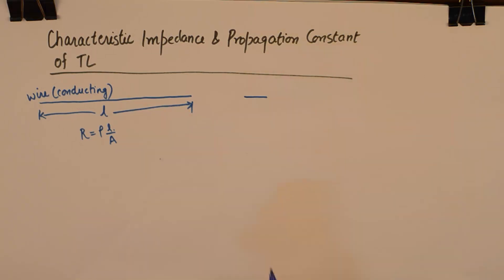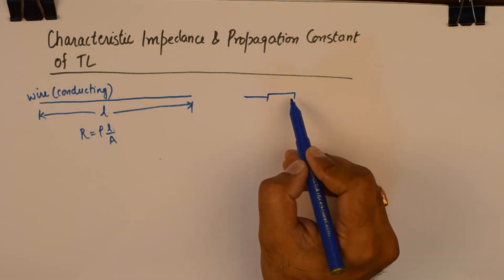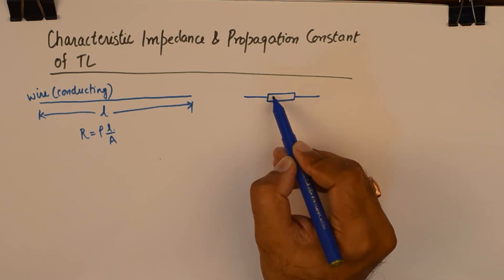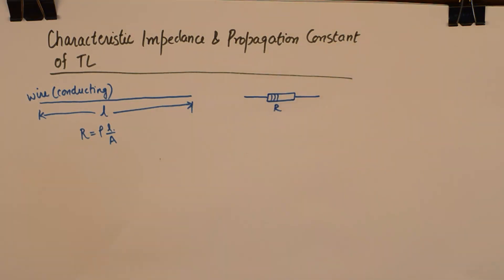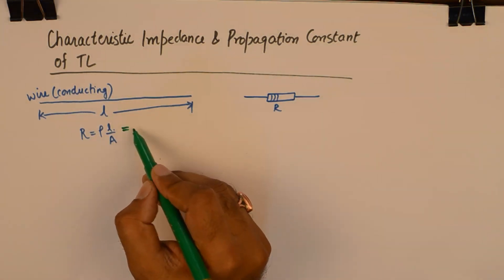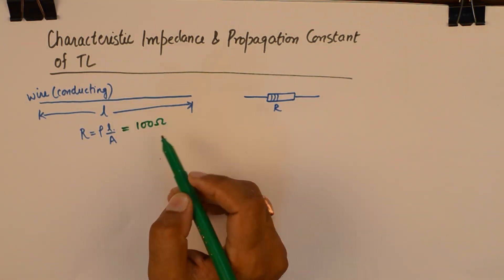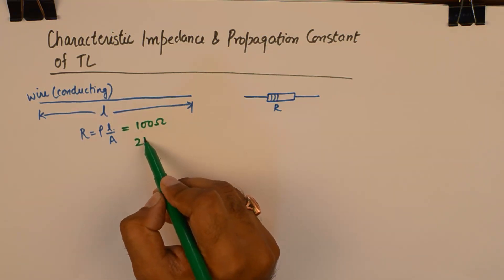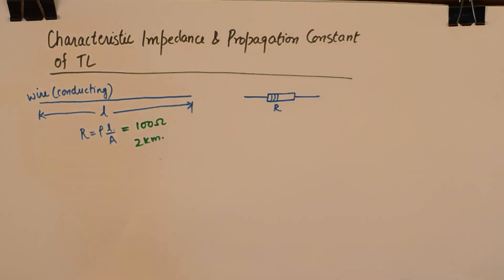On the other hand, there is something called a lumped element which we all know and which we have all seen as components, as semiconductor components. We know that there are semiconductor components specially designed to offer resistance in a circuit. And an important part is even if we achieve or get a resistance of around 100 ohm with a wire of 2 kilometers, we cannot practically use it in our circuits.